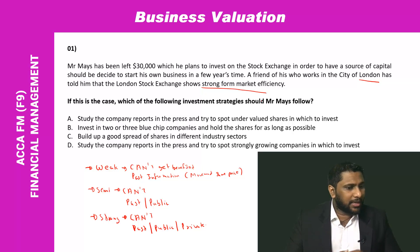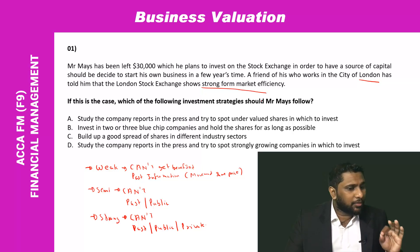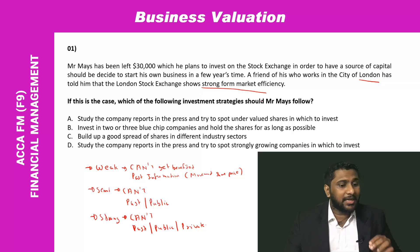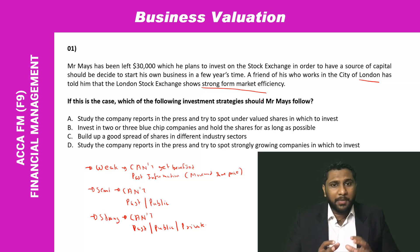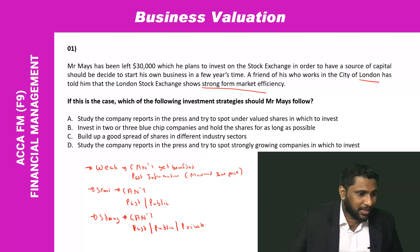Option A — studying company reports to spot undervalued shares — is wrong. Option B — investing in two or three blue chip companies and holding shares as long as possible — is also wrong. Option C — building up a good spread of shares in different industry sectors — is correct. If your share market is strong form efficient, you need a good spread in your investments. The answer is C.